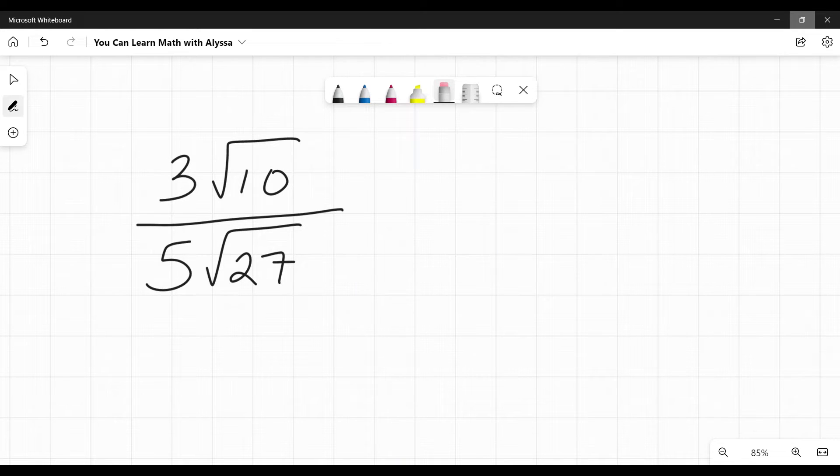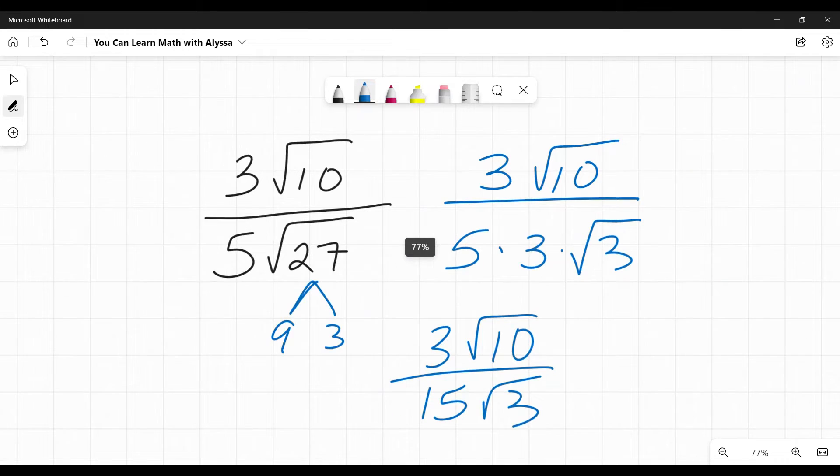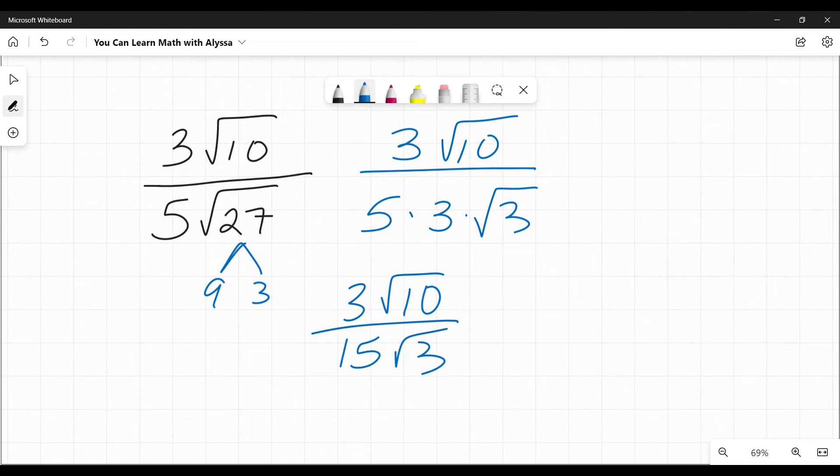It's a lot easier to simplify the numbers when they're smaller. It's just easier to find those perfect squares. So here in 27 on the bottom, 27 is the same as nine times three. I'm just going to write that down there and nine is a perfect square. So I can take the square root of nine and bring it out. So on the bottom, the three comes out, I have a square root of three left behind and on top is still the same. I haven't changed it at all. Now I have three square root of 10. Five times three is 15 square root of three.